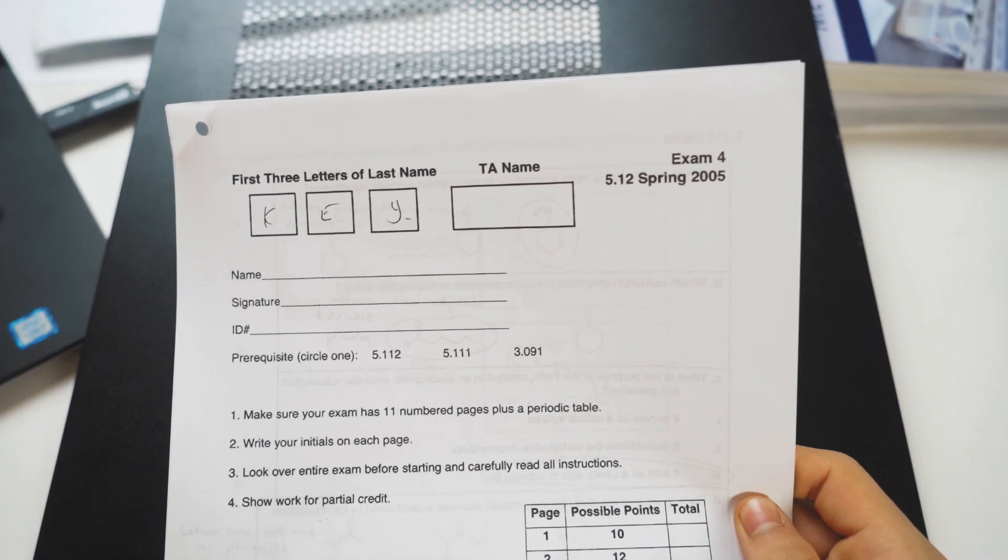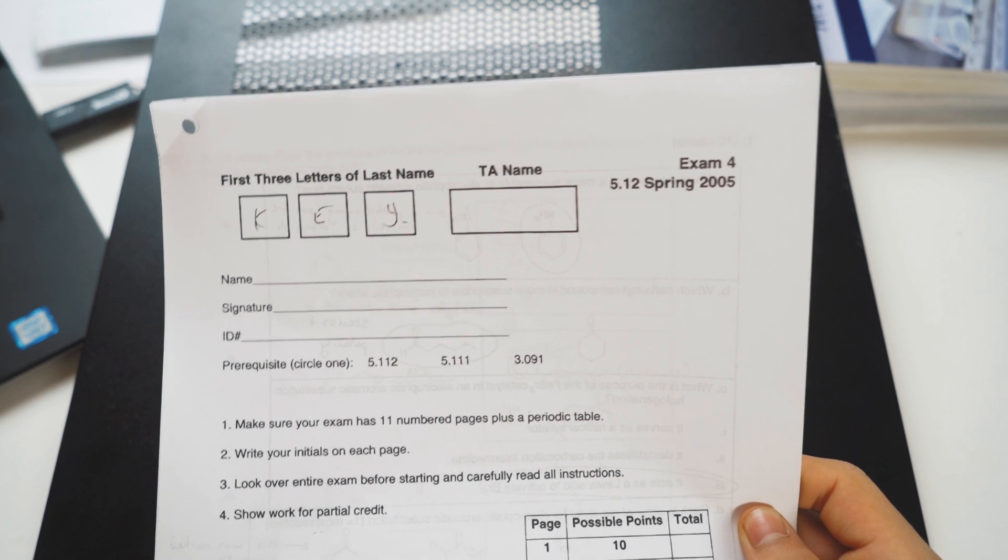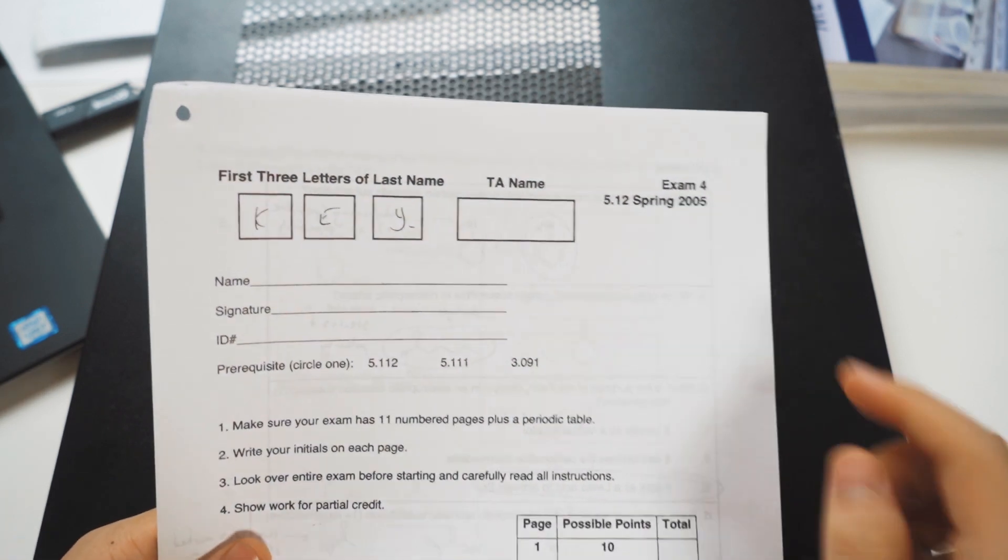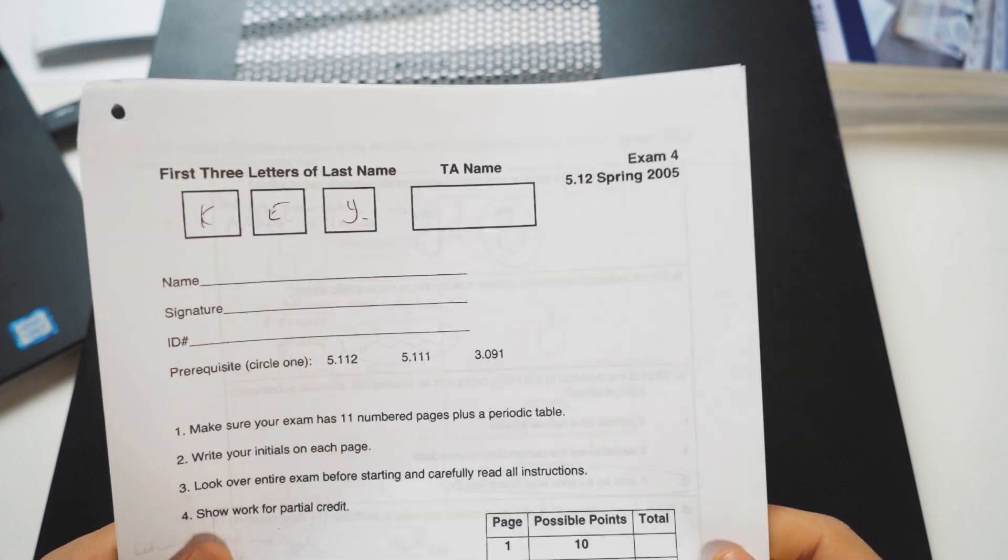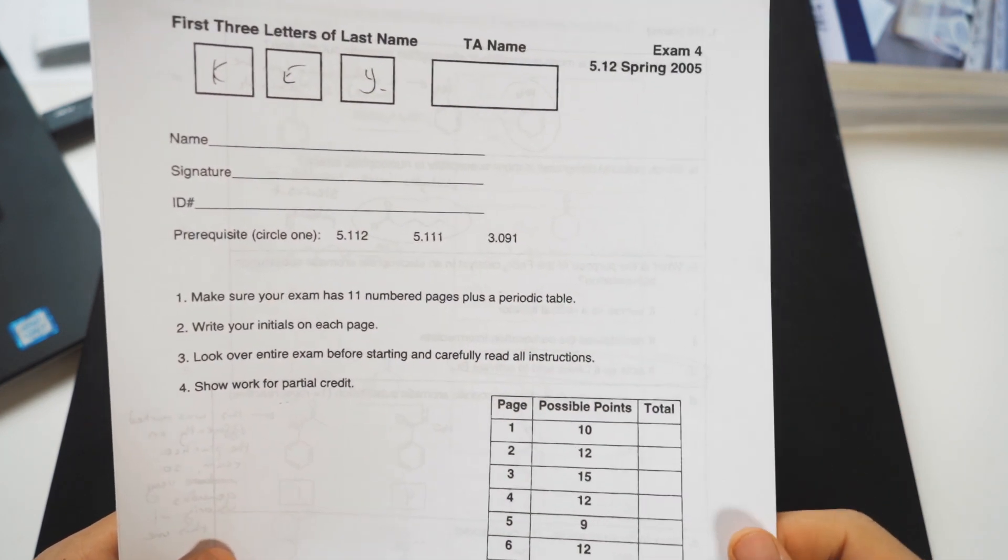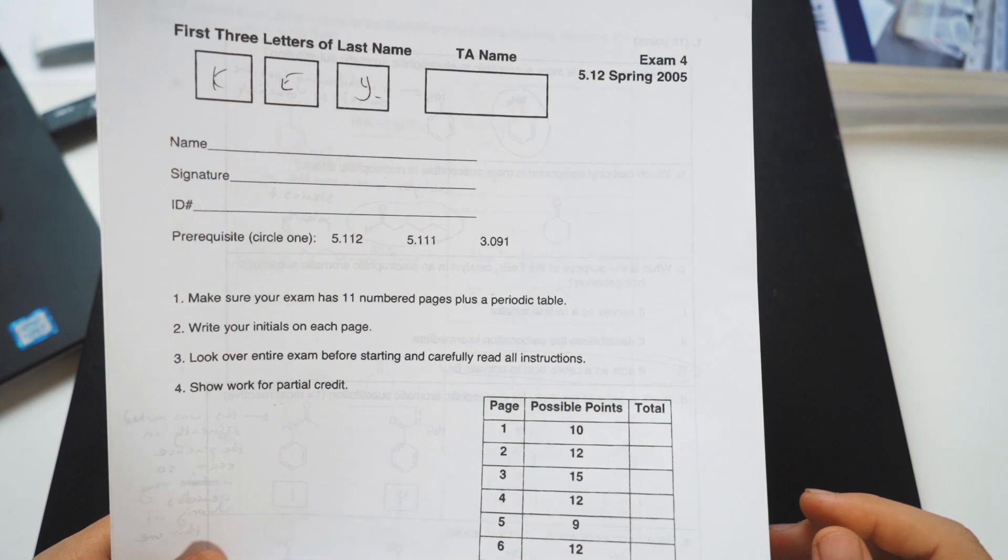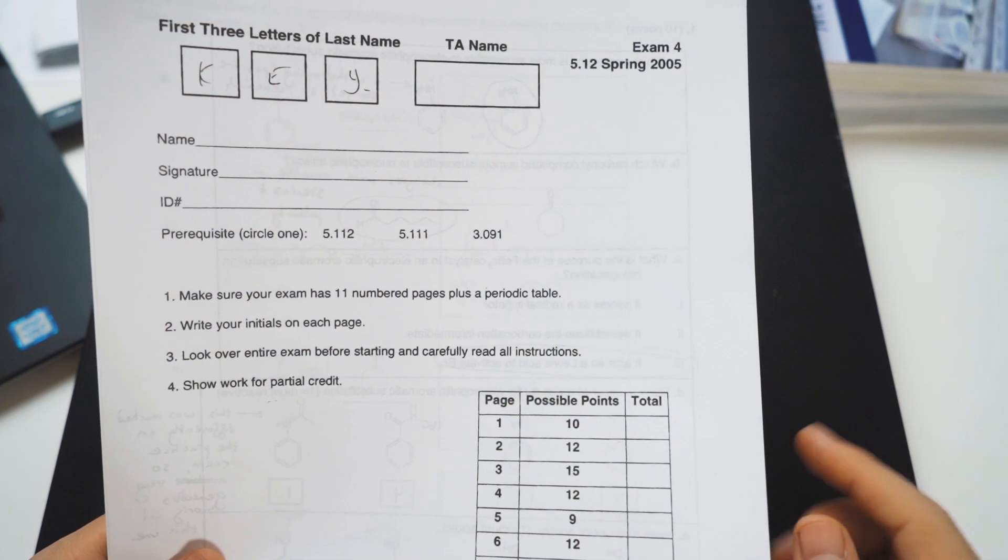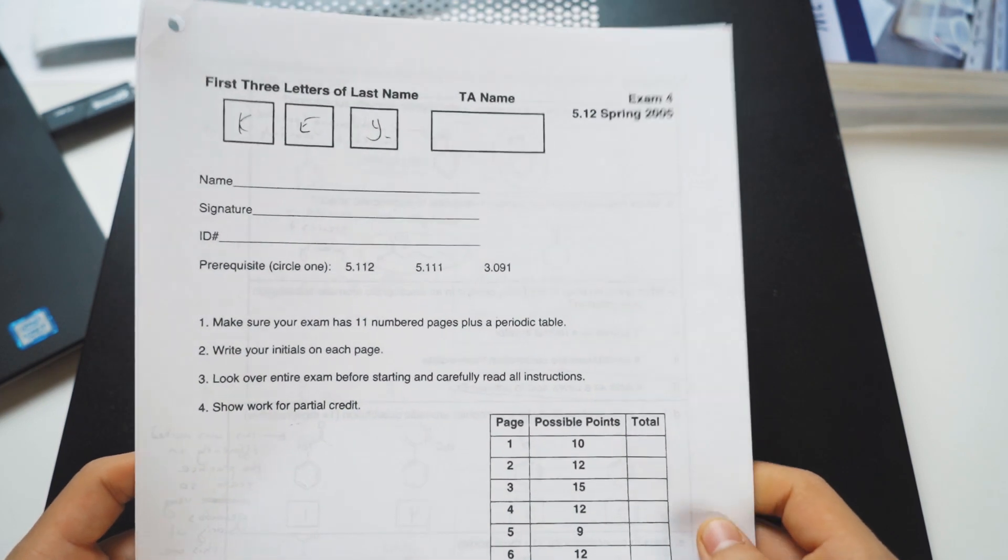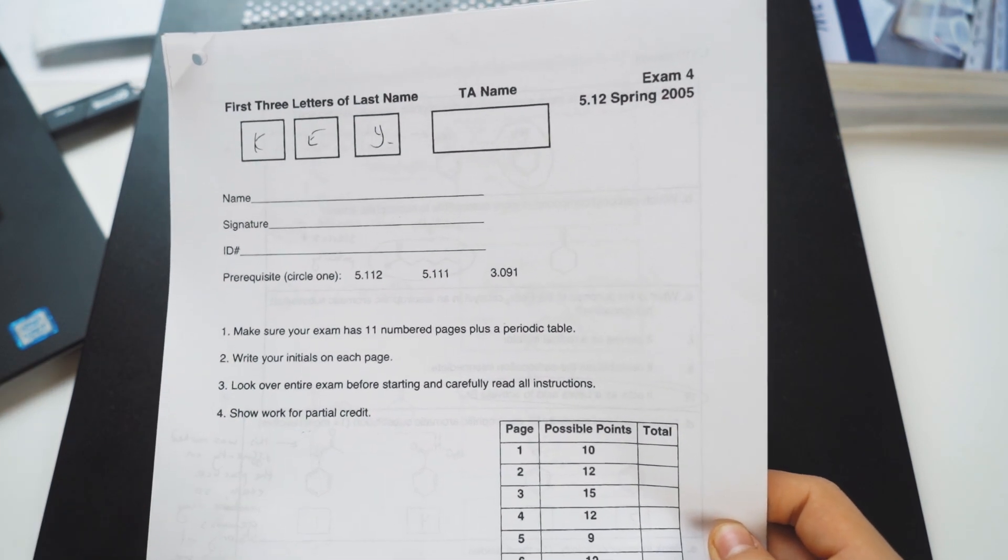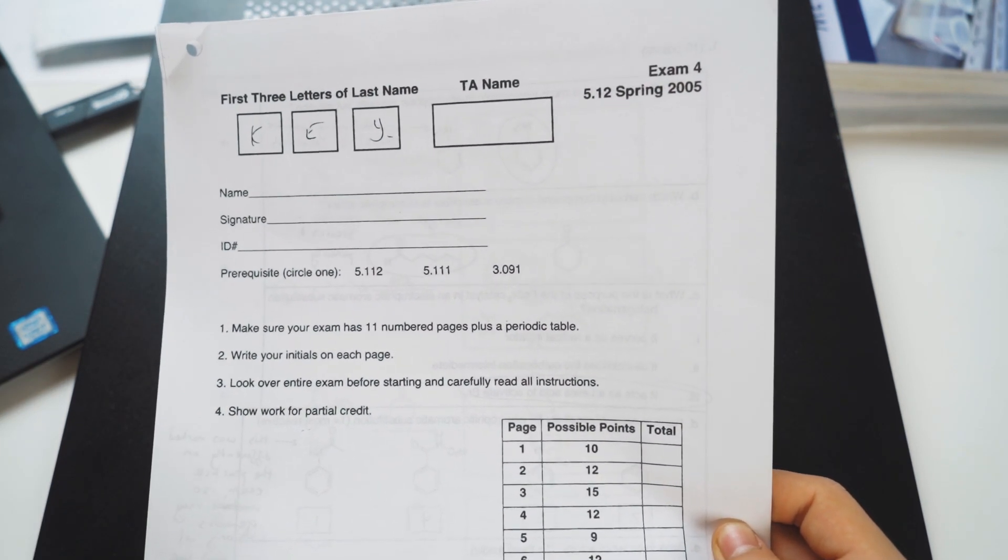So we have here the key to exam number four for Orgo 1 at MIT, and I think right off the bat these first little questions are pretty easy. I know my name, signature, ID number, not too bad. This is an 11 page exam with 10 pages being actual questions, 1 of the 10 being an extra credit problem. And you get a periodic table but you don't get a reaction tree, which is how we had it in Orgo 1, but in Orgo 2 we were actually allowed to use a reaction tree.